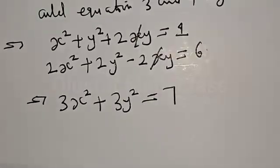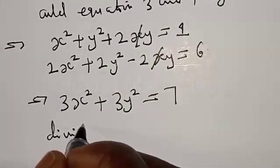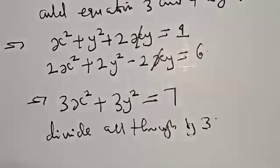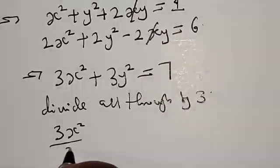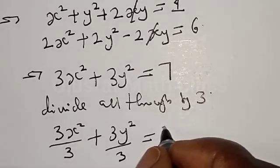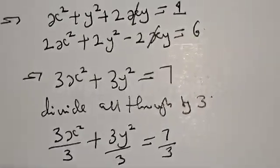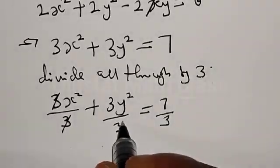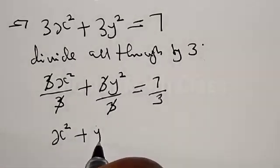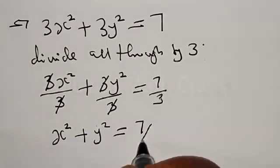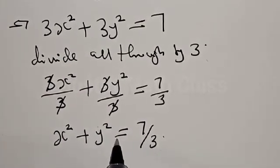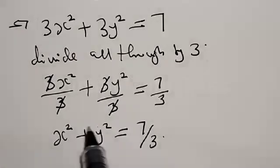So we have 3s squared plus 3y squared equal to 6 plus 1, that is 7. Dividing all through by 3, the 3s and 3y cancel, and we are left with s squared plus y squared equal to 7 over 3. So the value of s squared plus y squared is 7 over 3, and that is our final answer.